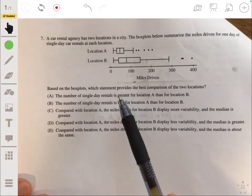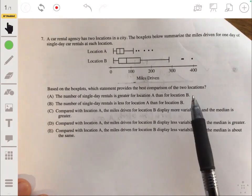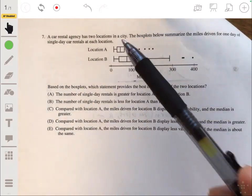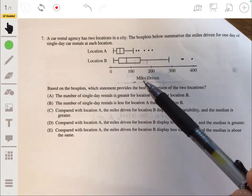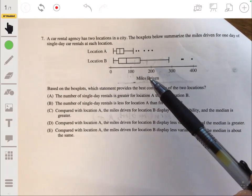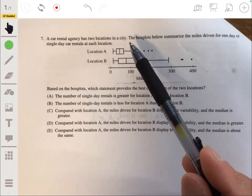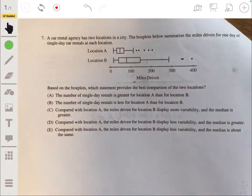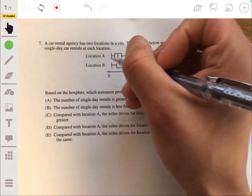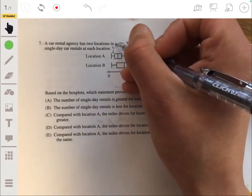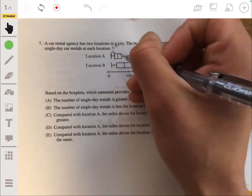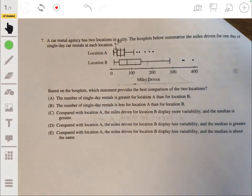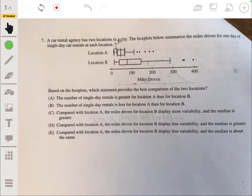The first one says the number of single day rentals is greater for location A than for location B. You can't tell if it's greater or less because it doesn't even tell you any value. It doesn't even tell you how many rentals each location had. Remember, box plots just give you percentiles or percents. This tells you that 25% of the rentals fell in here and 25% fell in here, but you don't know how many in total had location A and how many in total had location B.